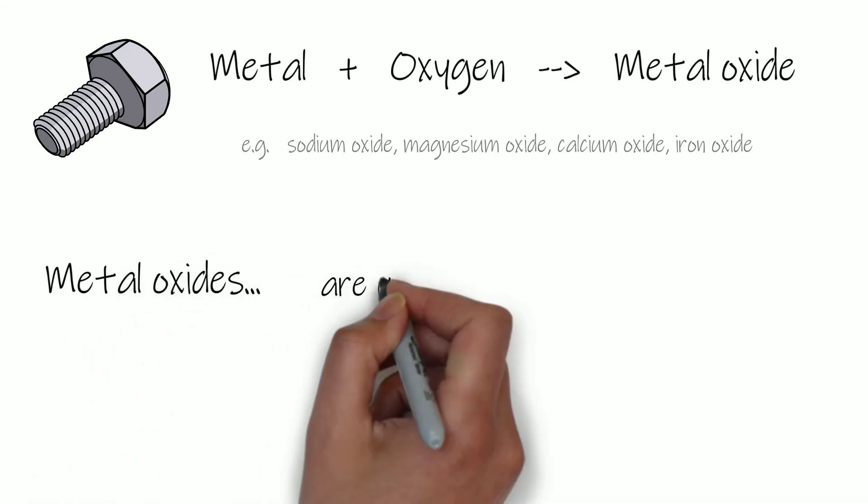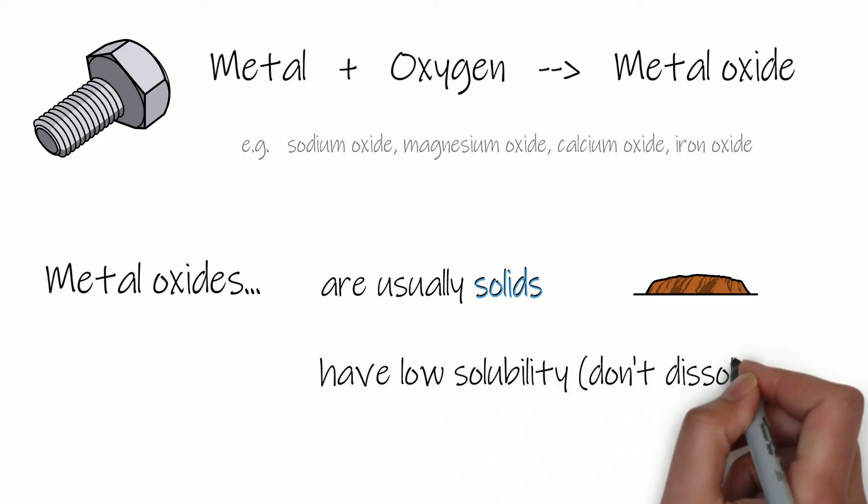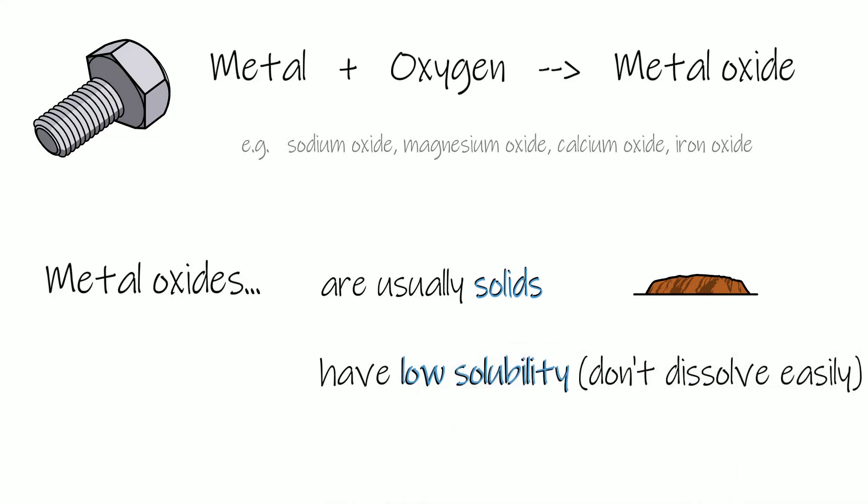Generally metal oxides have some similar properties. They're usually solids rather than liquids or gases. They usually have a low solubility in water which means they don't dissolve very easily in water and if you add them to water they won't completely dissolve. They also when you do dissolve them in water tend to produce a solution that has a high pH above 7, so they form an alkaline solution.